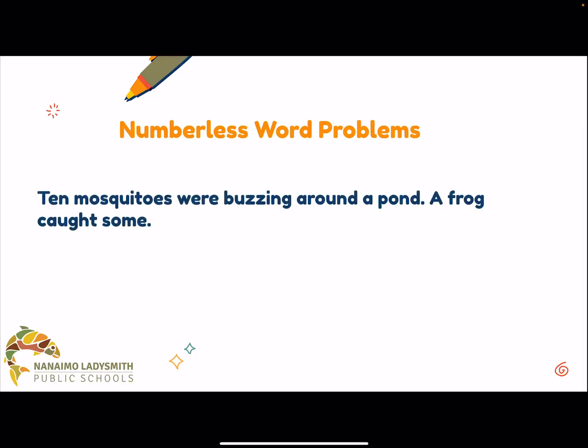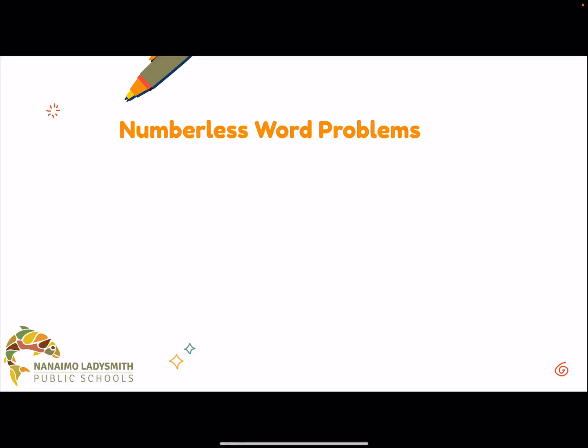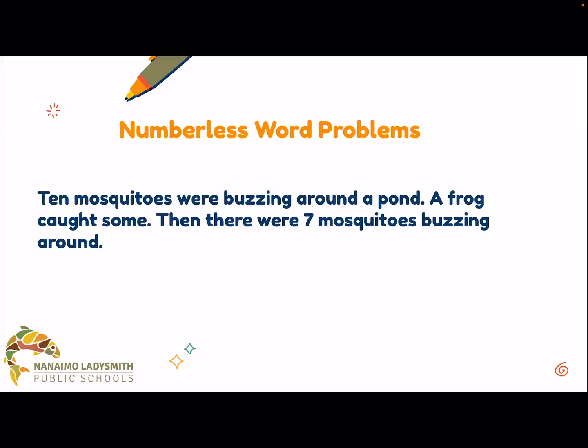Now we're going to go to the next part and add something in. We want to give students time to think about this and see what's different. Now we say there are 10 mosquitoes buzzing around a pond and a frog caught some. Then we give them more information. We're getting students to pair together or think independently, getting them to share what's changed and maybe what they would do to approach the problem, or what the question might be — because we haven't really asked a question yet, we're just building context.